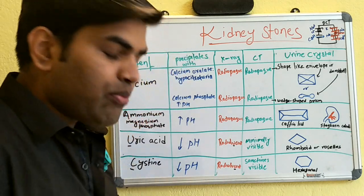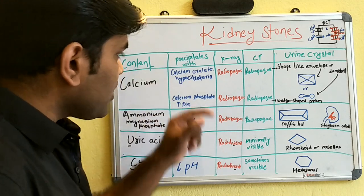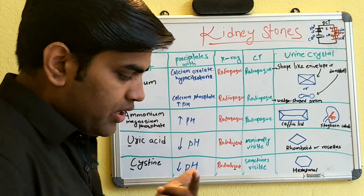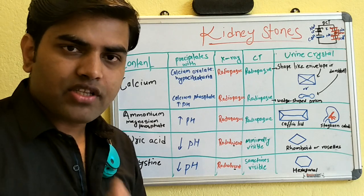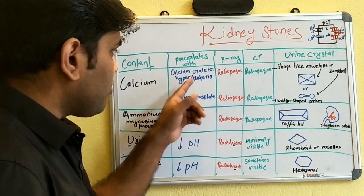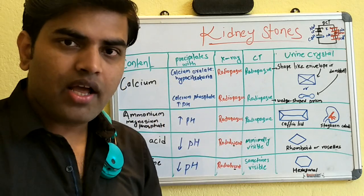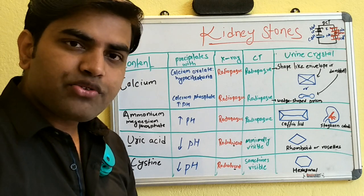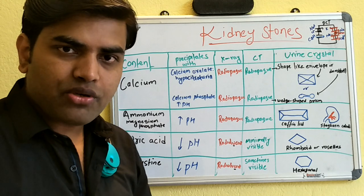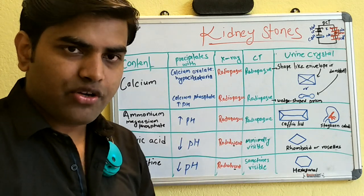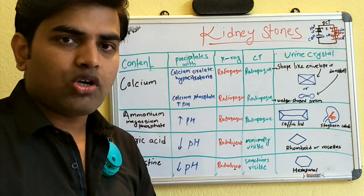Hypocitraturia is associated with decreased urine citrate. The causes of hypocitraturia include: use of ethylene glycol (antifreeze), which can lead to hypocitraturia; excess vitamin C use; and malabsorption syndrome, where citrate is not absorbed from the gut. Patients with these conditions have the maximum chance of developing calcium oxalate stones.